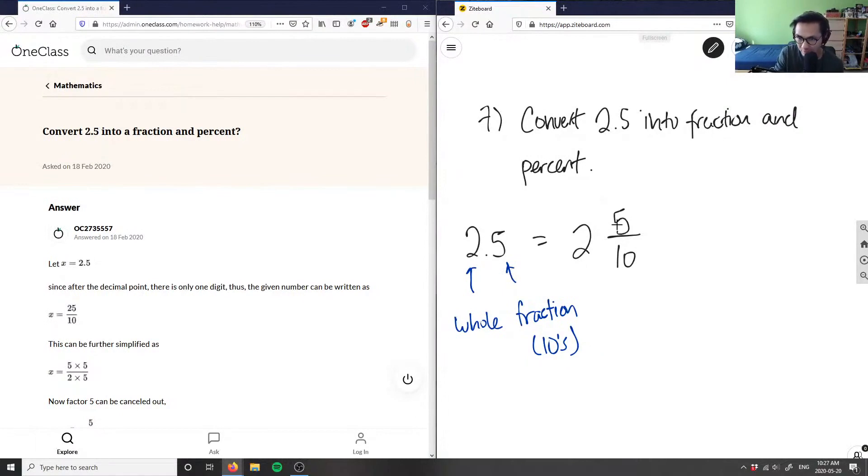And then what I can do now is I can convert this. This is now a mixed fraction. I can convert this into an improper fraction by simply multiplying in the whole number. So I can say 2 times 10 here. So 2 times 10 here is 20, and I'm going to add the numerator.